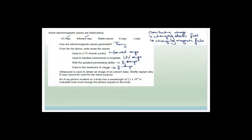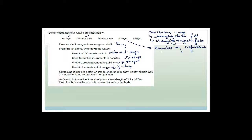Ultrasound is used to obtain an image of an unborn baby. Briefly explain why x-rays cannot be used for the same purpose. X-rays are absorbed by soft tissue and only reflect bones — so if you want to see the skeleton of the baby you could use x-rays, but to get an image of the unborn baby you must use ultrasound. An x-ray photon incident on the body has a wavelength of 2.1 × 10⁻⁹ m.